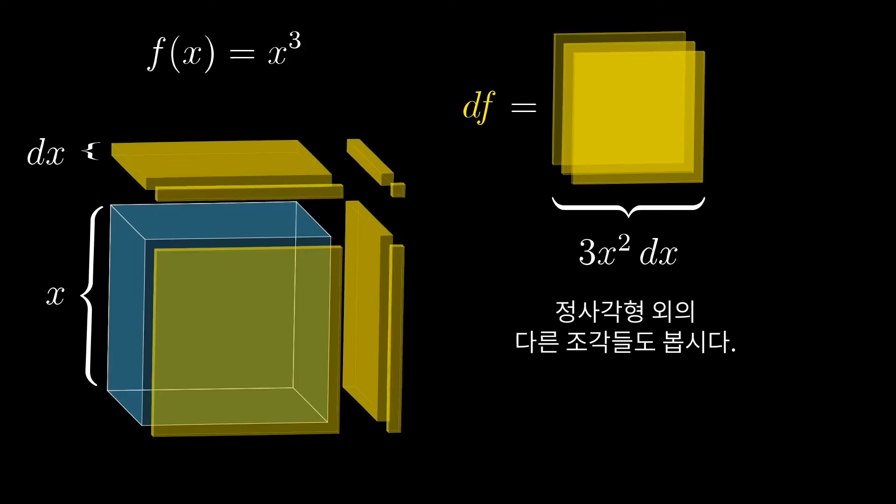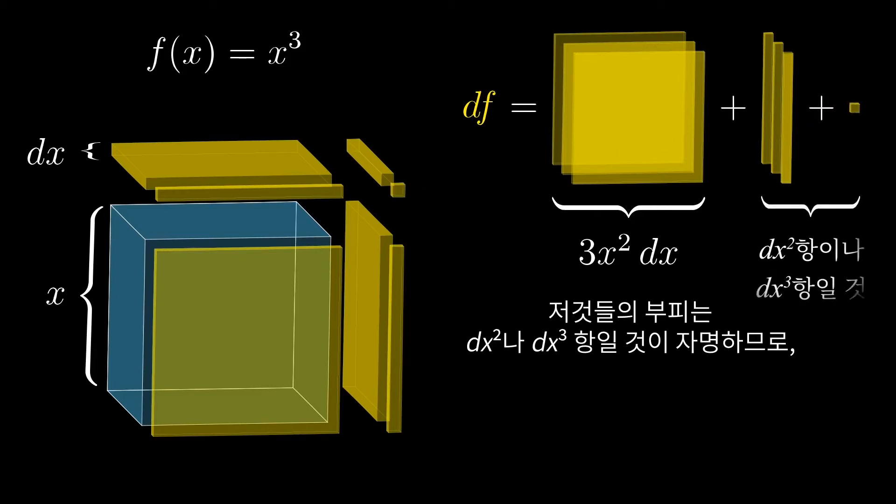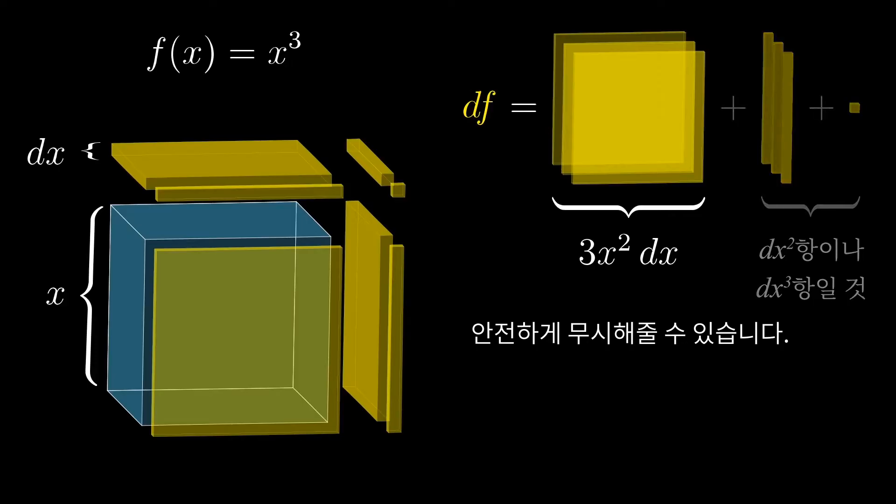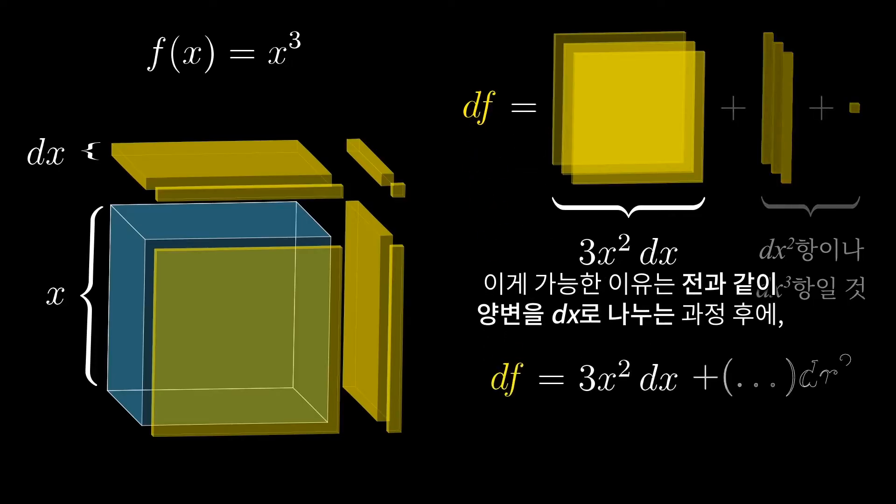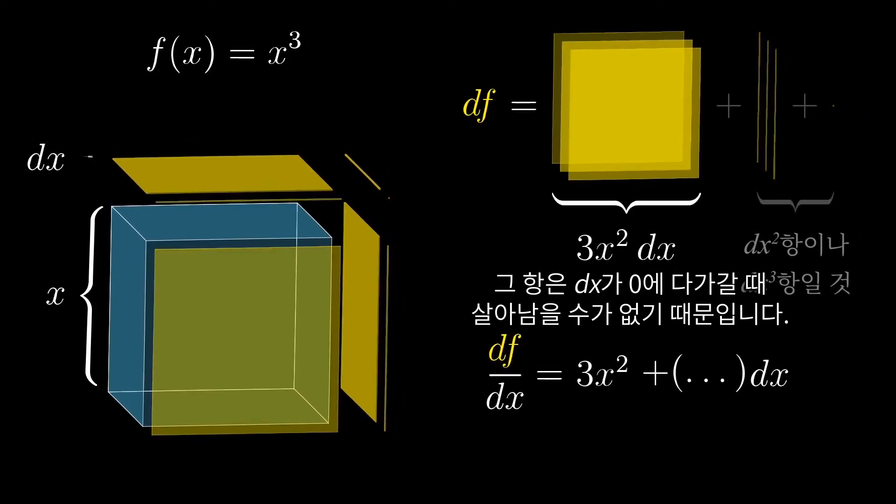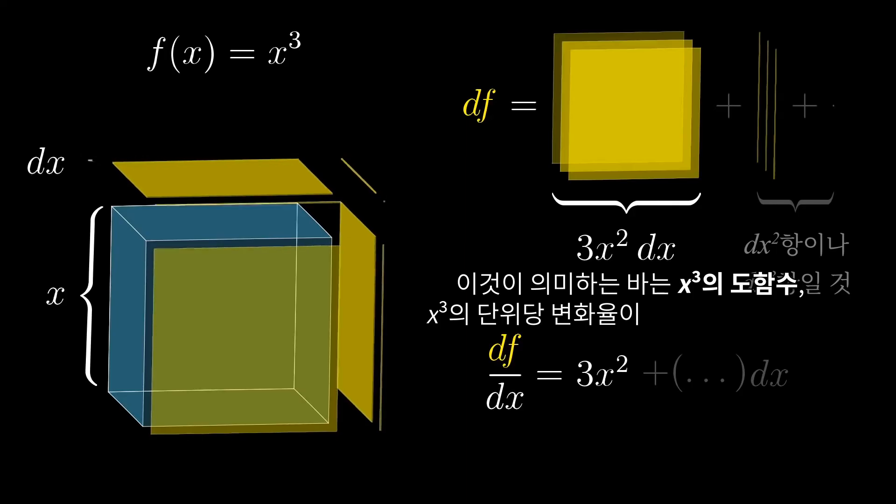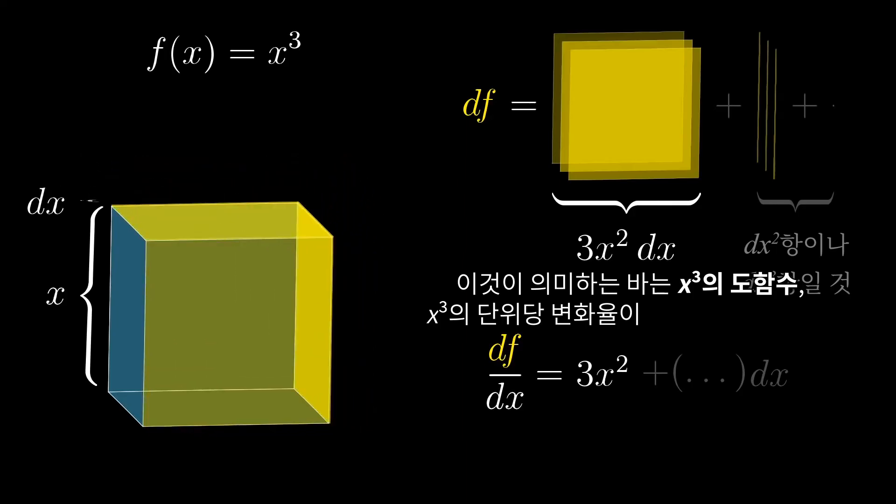And to be sure, there are other slivers of volume here along the edges and that tiny one in the corner, but all of that volume is going to be proportional to dx squared, or dx cubed, so we can safely ignore them. Again, this is ultimately because they're going to be divided by dx. And if there's still any dx remaining, then those terms aren't going to survive the process of letting dx approach 0. What this means is that the derivative of x cubed, the rate at which x cubed changes per unit change of x, is 3 times x squared.